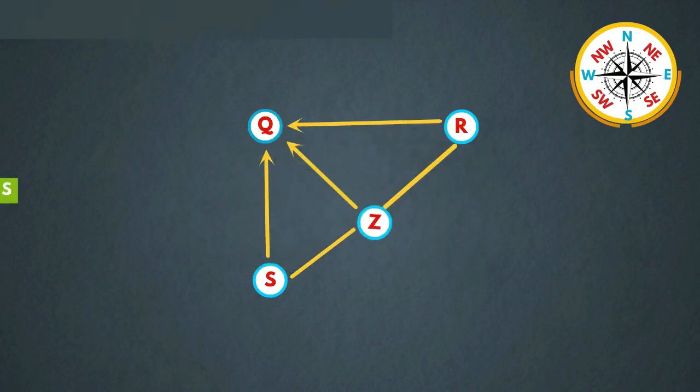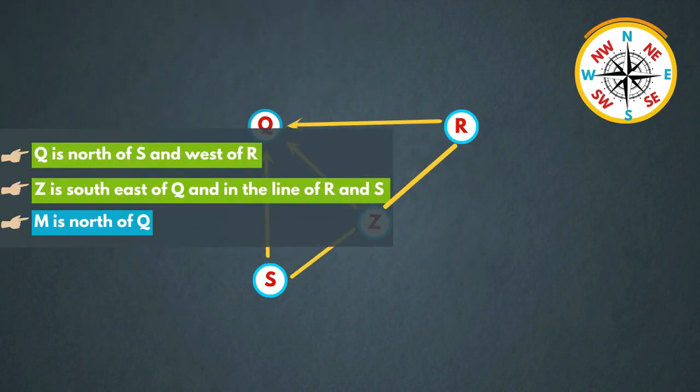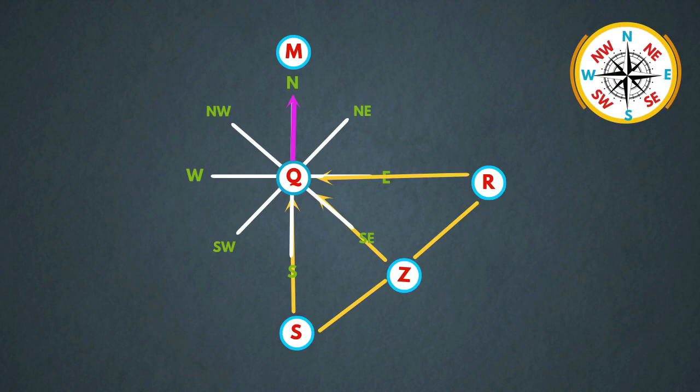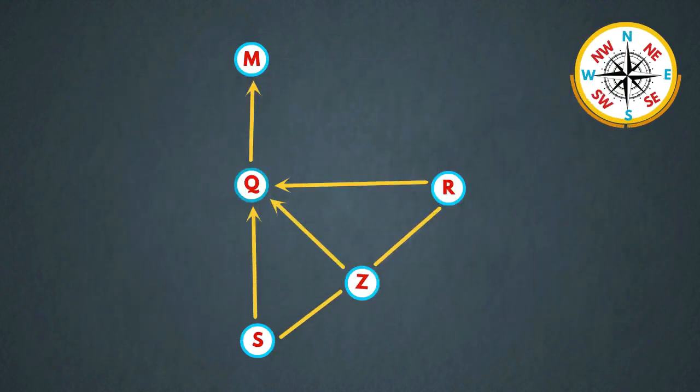In the next statement they also given that M is north of Q. Here this is M and north of Q. This is the final diagram.